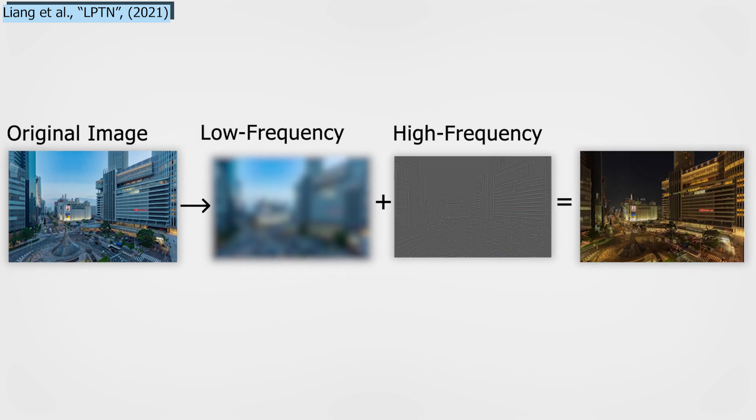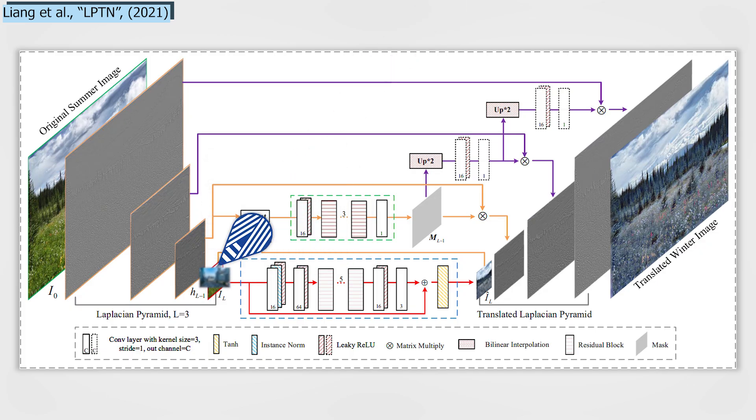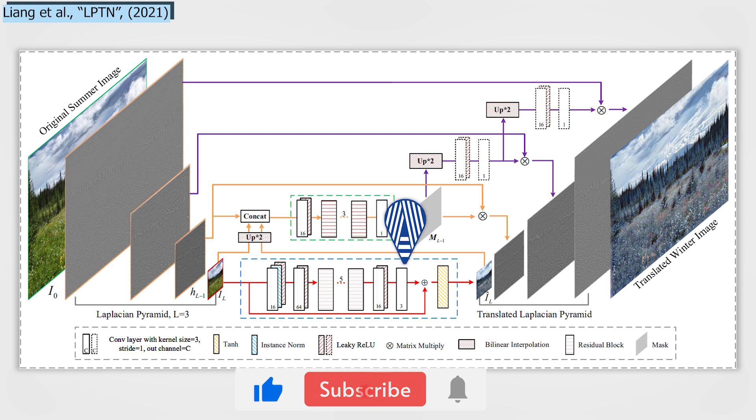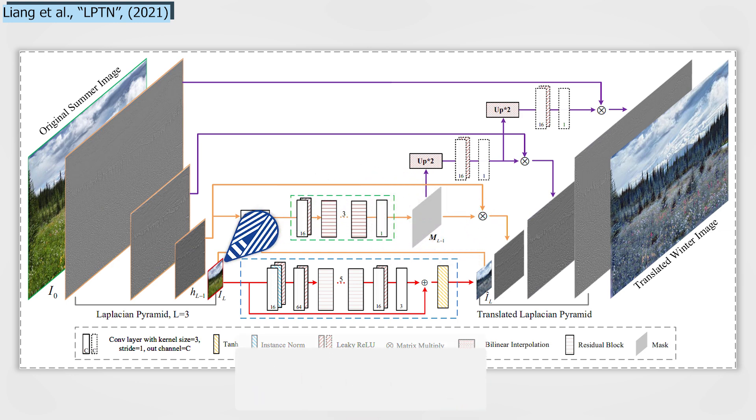This lower-quality version of the image can be easily translated using an encoder-decoder, just like any other image translation technique we previously mentioned. But since it's done on a much lower-quality image and a much smaller image, it's exponentially faster to process.